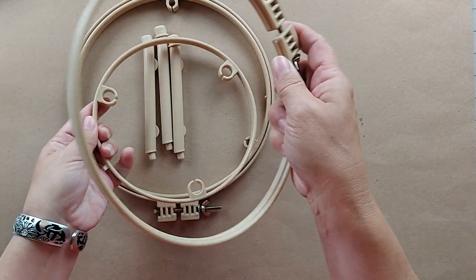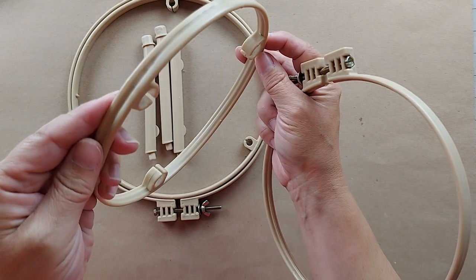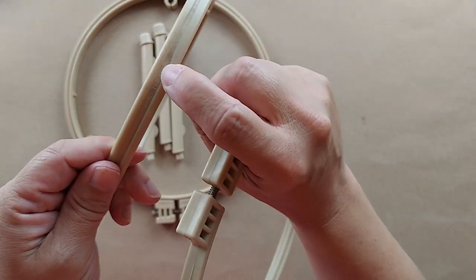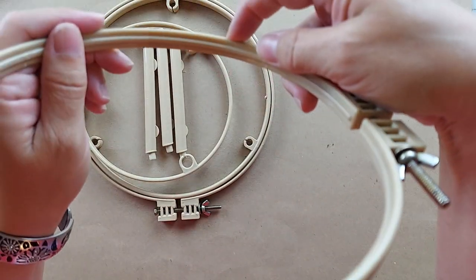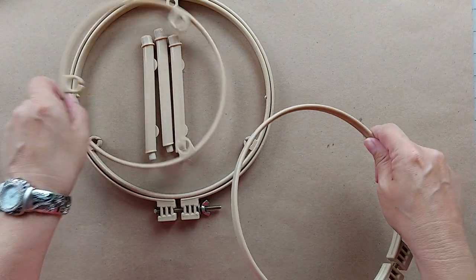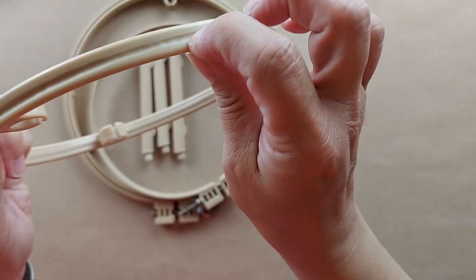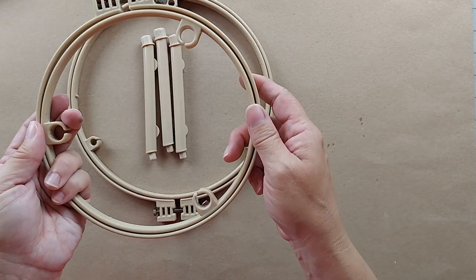The Morgan hoops have this groove and lip system. It's got a lip here and then a groove on the outside of this one, and that is what allows you to get the weaver's cloth drum tight in the hoops.